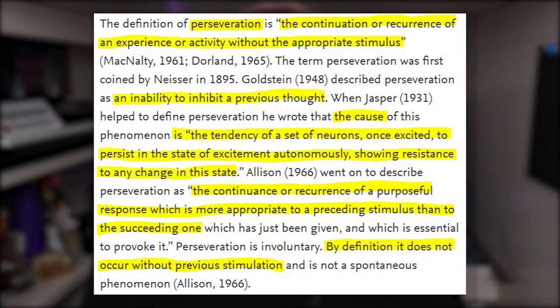This actually has a little bit to do with another executive function called inhibition. There appear to be many definitions for perseveration, but I found this source quite useful. The definition of perseveration is the continuation or recurrence of an experience or activity without the appropriate stimulus. Goldstein described perseveration as an inability to inhibit a previous thought. When Jasper helped to define perseveration, he wrote that the cause of this phenomenon is the tendency of a set of neurons, once excited, to persist in the state of excitement autonomously, showing resistance to any change in this state.